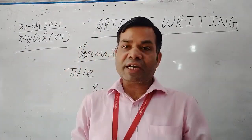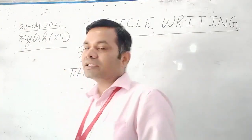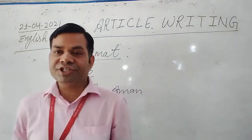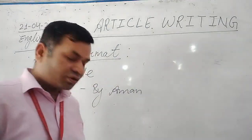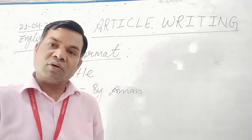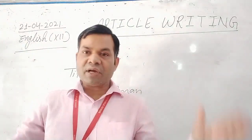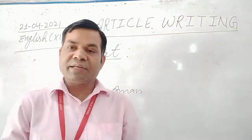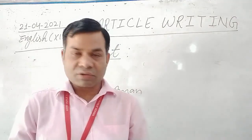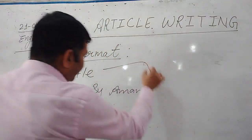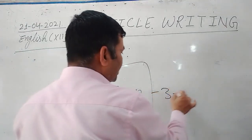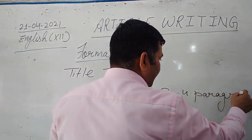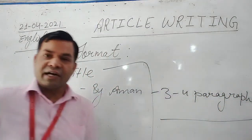In some articles, you must have seen the writer's name is written at the end of the article. Once you have finished, it is written at the end. So you can also write this way — after you have finished your content, then you can write the name of the writer. A good article must be written in three to four paragraphs.